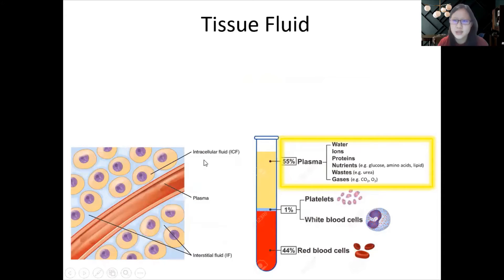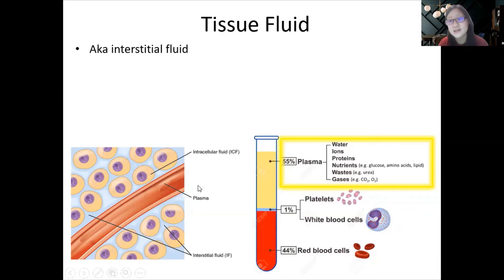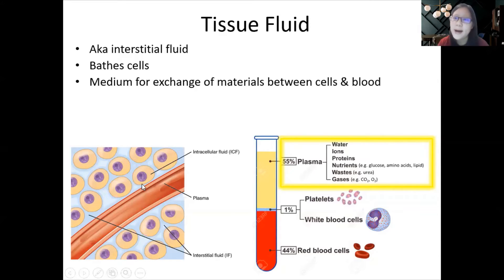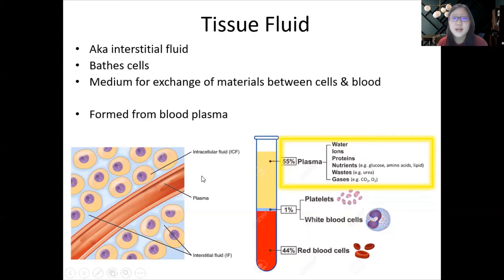What is tissue fluid? It is also called interstitial fluid because it sits in between cells. It bathes cells and acts as a medium for exchange of materials between cells and blood. For example, cells need glucose and oxygen, but want to get rid of urea, carbon dioxide, and other waste materials — and all of that passes through the tissue fluid.